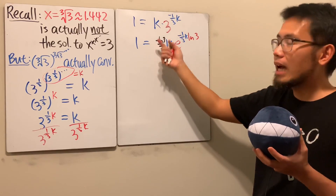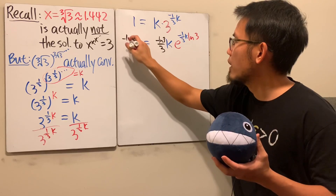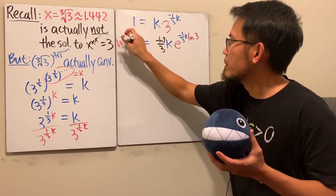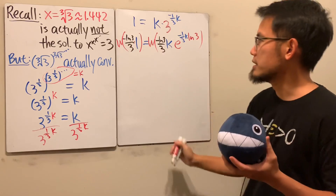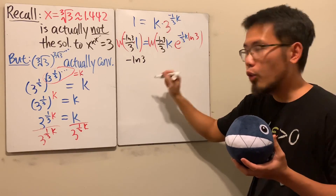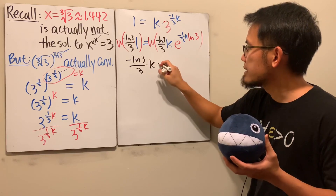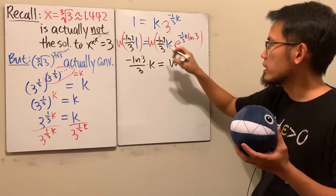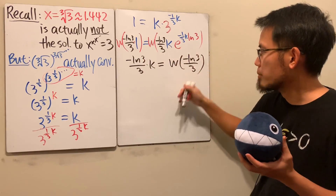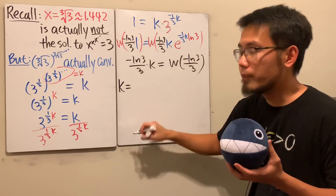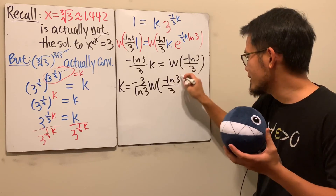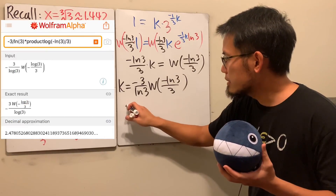Now multiply both sides by −(ln 3)/3 to get −(ln 3)/3 = −(ln 3)/3 · k · e^(−(ln 3)/3 · k). Applying the Lambert W function to both sides, the right-hand side simplifies to just −(ln 3)/3 · k. So k equals negative three over ln 3, times W(−(ln 3)/3).